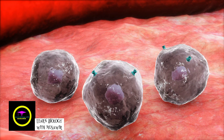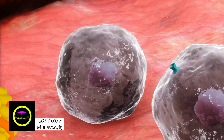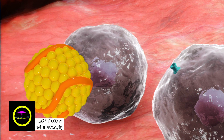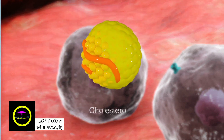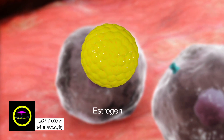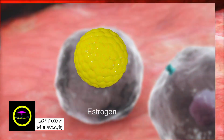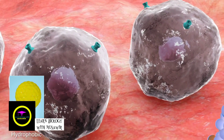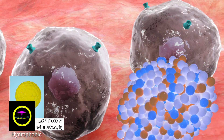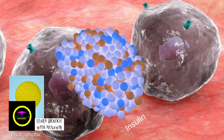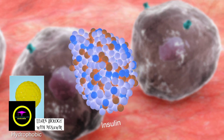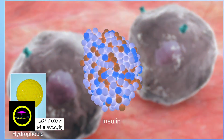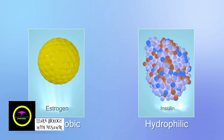There are generally two chemical types of circulating hormones. Hydrophobic hormones, like estrogen, are also known as steroids and are derived from cholesterol. These hormones tend to be lipid-soluble. Hydrophilic hormones, like insulin, are based on amino acids, so they tend to be water-soluble. The chemical category — hydrophobic or hydrophilic — determines the method by which the hormone affects the target cell.